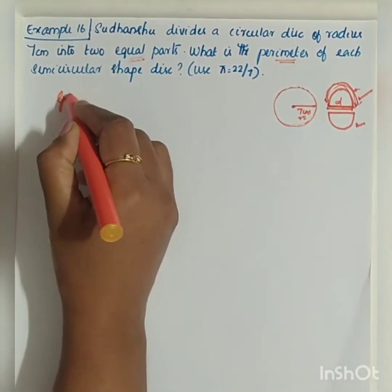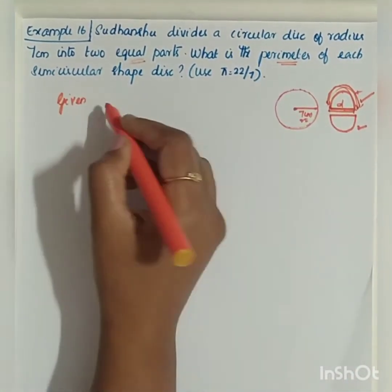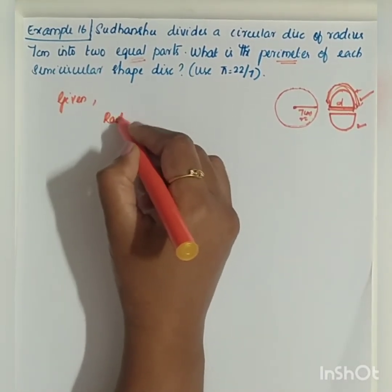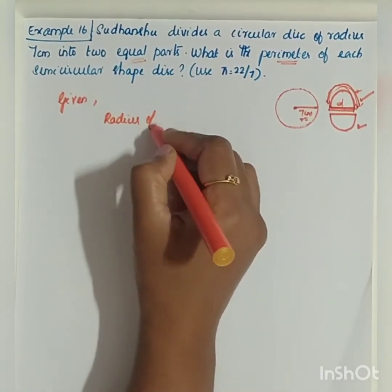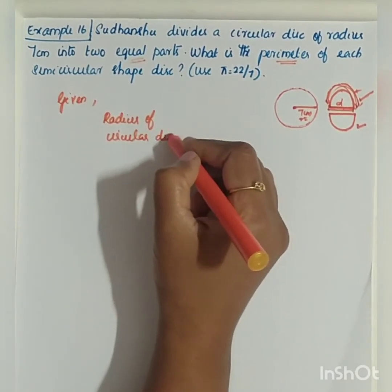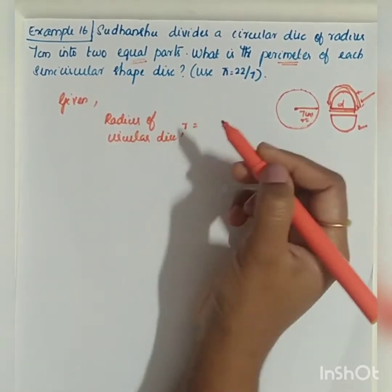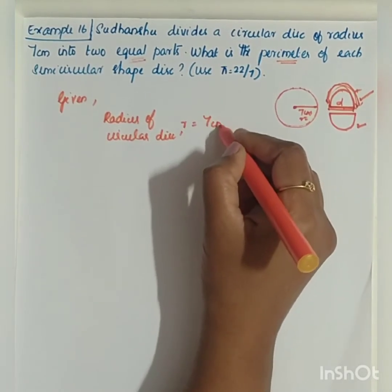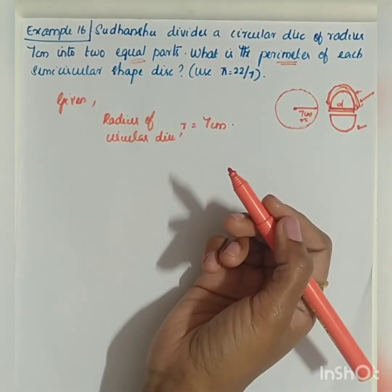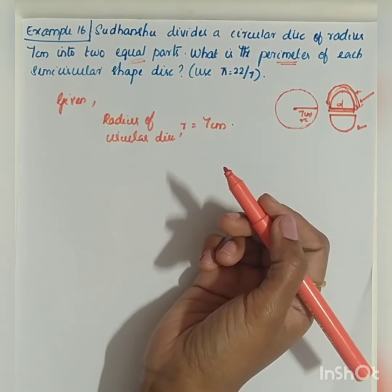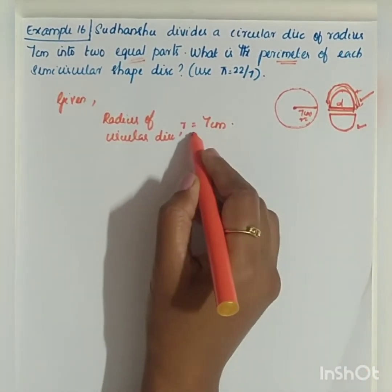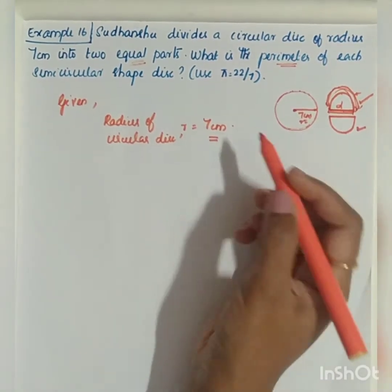Let us write what is given. The radius of the circular disk is given. Let me take it as small r. r is equal to 7 cm. We know that r is equal to 7 cm.